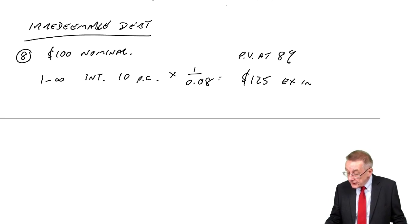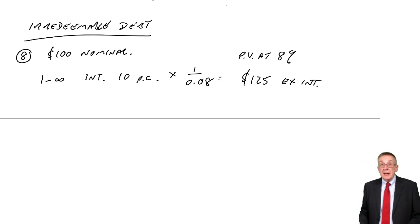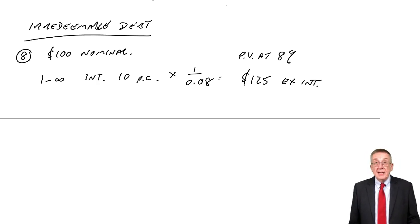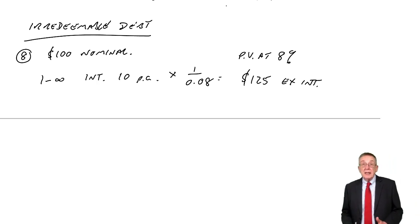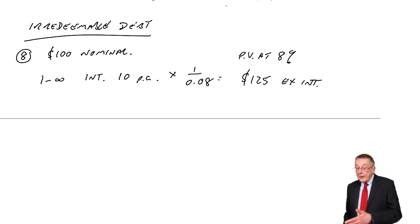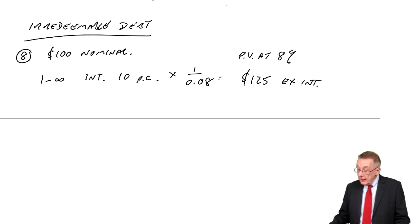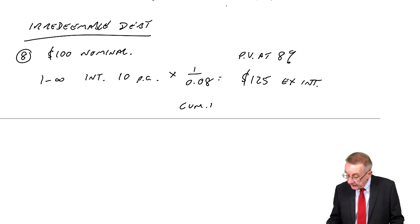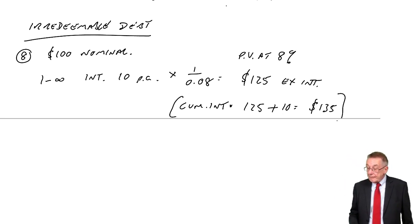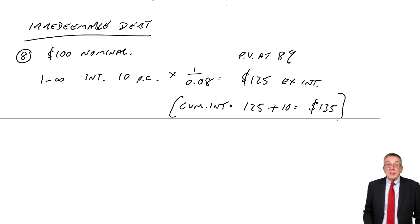That's an ex-interest market value, assuming interest has just been paid, so the first interest will be in a year's time. Just as with shares, in the exam market values are always ex-interest unless specifically told otherwise. If you are about to pay the interest, the cum-interest market value is the ex-interest value plus the interest about to be paid — $10 — giving $135. The logic is exactly the same as with equity.